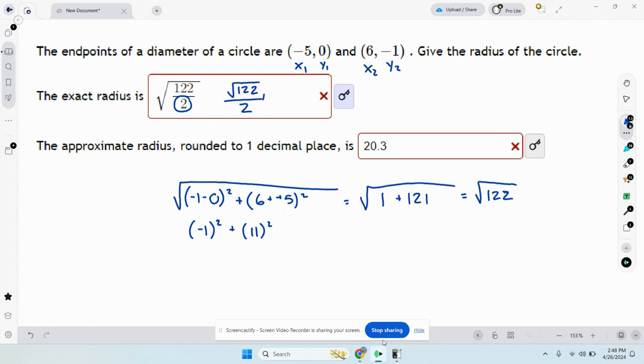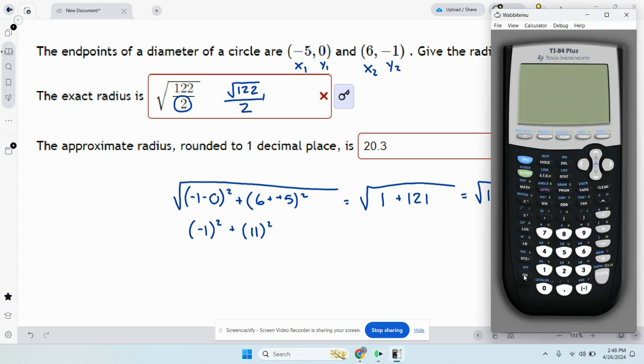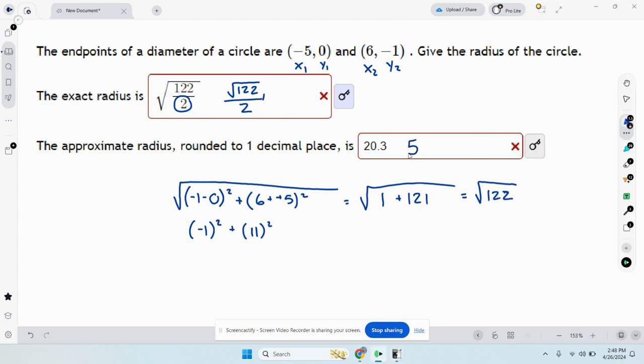So then I can just plug it in the calculator to figure out what it is. This should be the square root of 122, enter, divided by 2. So we get 5.52 or 5.5.